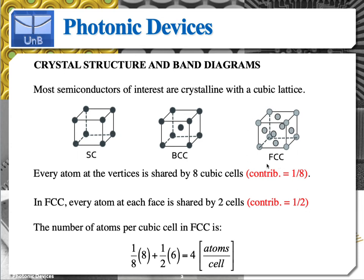In FCC, we can estimate that the number of atoms per cubic cell is: we have eight atoms at the vertices, so eight times the contribution of each atom, which is one-eighth, plus six atoms at the face multiplied by one-half. So you have, on average, four atoms per unit cell.